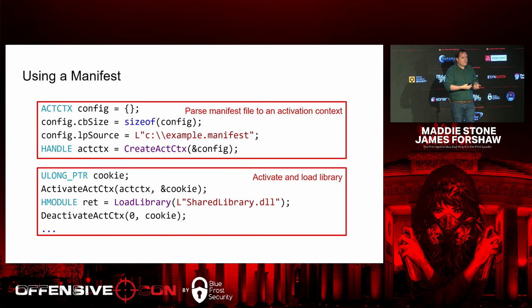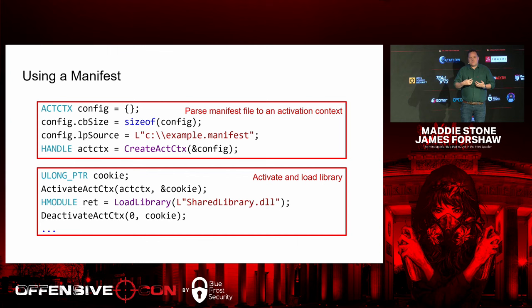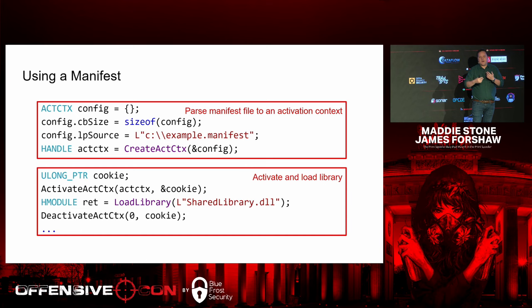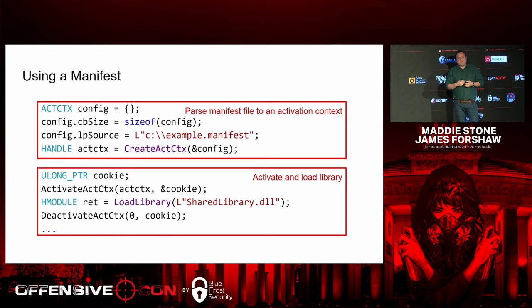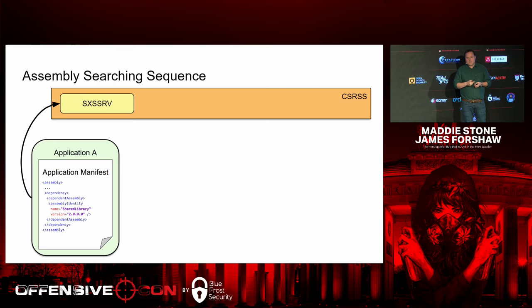Windows provides APIs to create something called an activation context — a binary structure containing information about dependencies from these manifest files. You call create_activation_context, pass it the path to an XML manifest file, and it parses the XML and returns a handle. With that handle, you can call activate_activation_context, and certain system APIs such as load library will recognize the active activation context on the current thread and perform dependency resolution automatically at runtime.